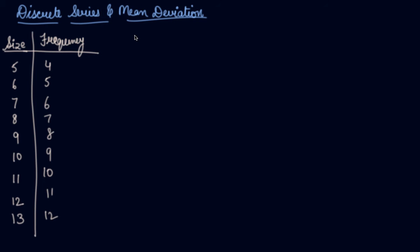In this video, we will be starting the mean deviation in the case of discrete series. First, let's understand using median. For median in the discrete series, you first arrange the series in ascending or descending order.